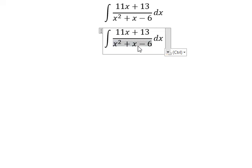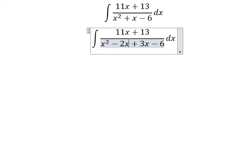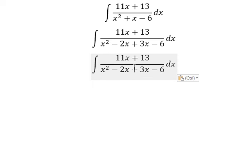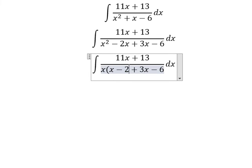I will add 3x minus 2x to split the middle term. We do this to create the factors. This way we can factor by grouping with 3 and 6.